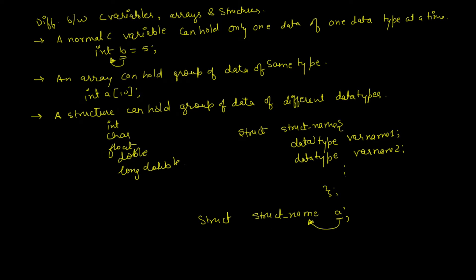Let us define a structure to store student information. Before that, note that in C++, classes are an extension of structures. In classes you can have functions, different variables, and access modifiers such as public, private, or protected. In C structures, we do not have these access modifiers and cannot define classes within a structure. Classes are actually a logical extension of structures.